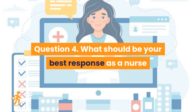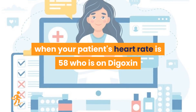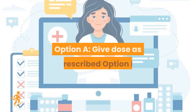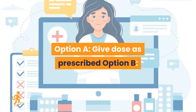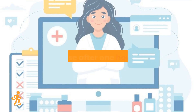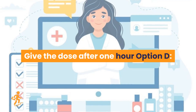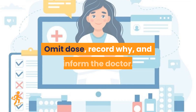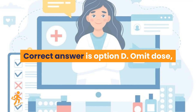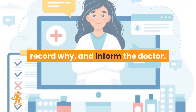Question 4. What should be your best response as a nurse when your patient's heart rate is 58, who is on digoxin, and due for the dose? Option A: Give dose as prescribed. Option B: Give dose until the doctor. Option C: Give the dose after one hour. Option D: Omit dose, record Y, and inform the doctor. Correct answer is Option D: omit dose, record Y, and inform the doctor.